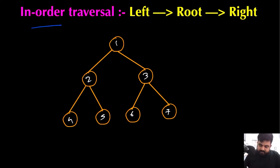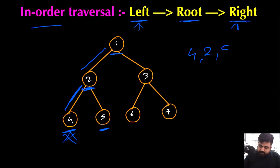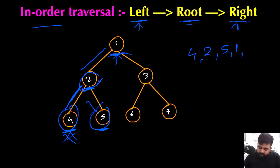During in-order traversal, we follow: left, root, right. Starting from the root, we keep expanding left until no left node exists. So node 4 is the first node visited. Since 4 has no children, we go back to its root node 2, then expand right to node 5. After visiting those three nodes, we go back to the main root node 1, visit it, then repeat the same left-root-right process on the right subtree.